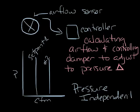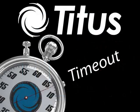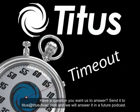Basically, the key difference between a pressure dependent and pressure independent VAV box is the flow sensor and the controller. And that's the difference between pressure dependent and pressure independent. Thanks for taking a time out with us.